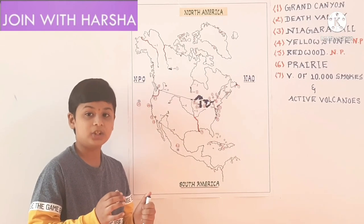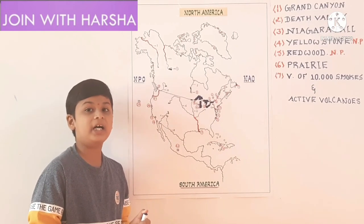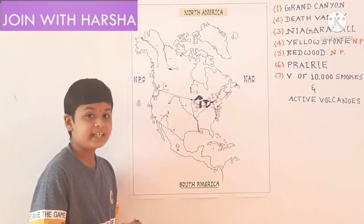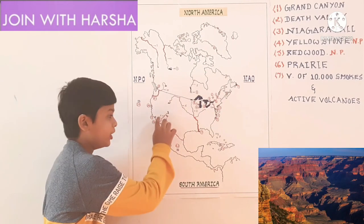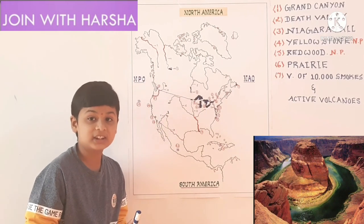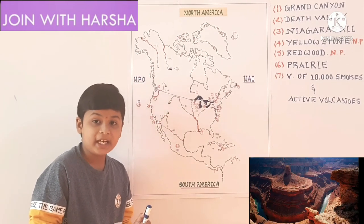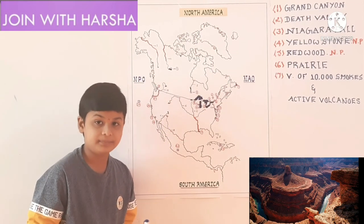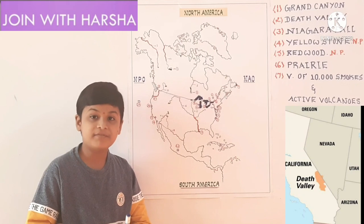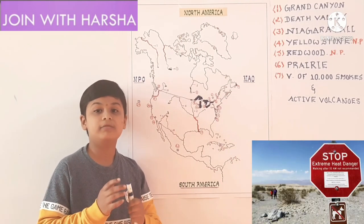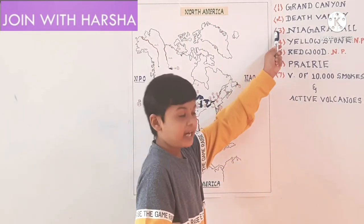Now let us learn geographical wonders in North America continent. First one is Grand Canyon. Grand Canyon is carved by the Colorado River in Arizona. It has 446 km length, 4 to 29 km wide, and 6,093 feet depth. Next one is Death Valley. Death Valley is a desert valley in eastern California. It is one of the hottest places in the world.